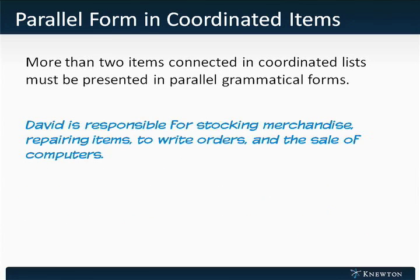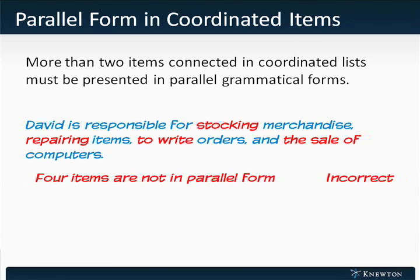Sometimes more than two items are connected in coordinated lists, and these must also be presented in parallel grammatical forms. Take, for example, this sentence: David is responsible for stocking merchandise, repairing items, to write orders, and the sale of computers. In this sentence, stocking and repairing are in parallel grammatical form, but to write orders and the sale of computers do not match this form.